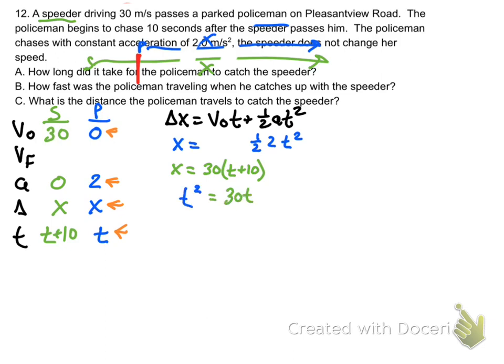Since both of these x's are equal to each other, we can set the right-hand sides equal to each other. Don't forget to distribute that 30 times the t plus 10 to get 30t plus 300.